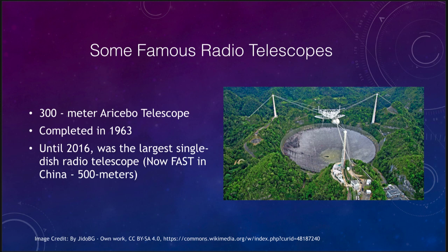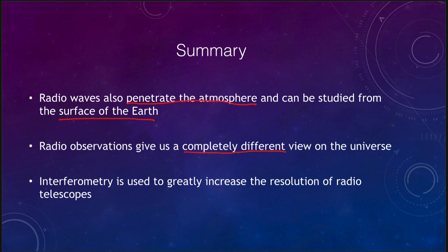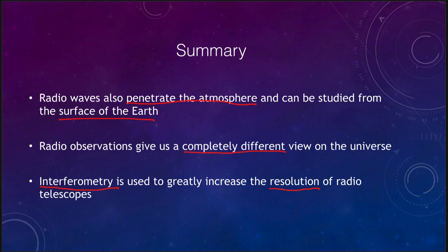To summarize what we've covered: radio waves can be observed from the surface of the Earth because they penetrate the atmosphere. They give us a completely different view of the universe, and that's very important as we observe further across the electromagnetic spectrum. We talked about interferometry and how it increases the resolution of radio telescopes, making them comparable to or even better than optical telescopes, allowing us to compare objects across different wavelengths and get better studies of them. That concludes this lecture on radio astronomy — we'll be back next time for another topic in astronomy. Have a great day, everyone.